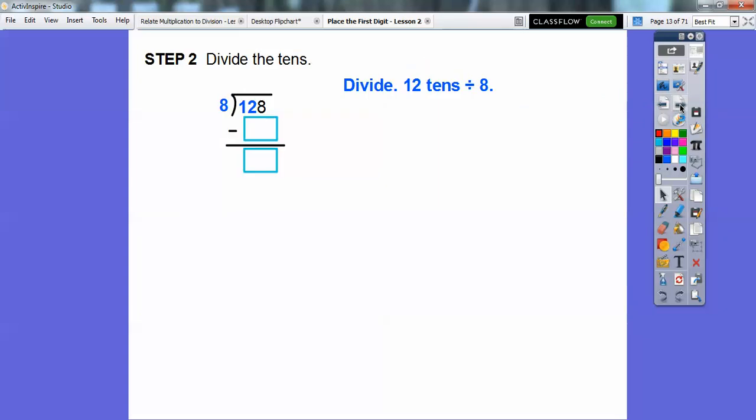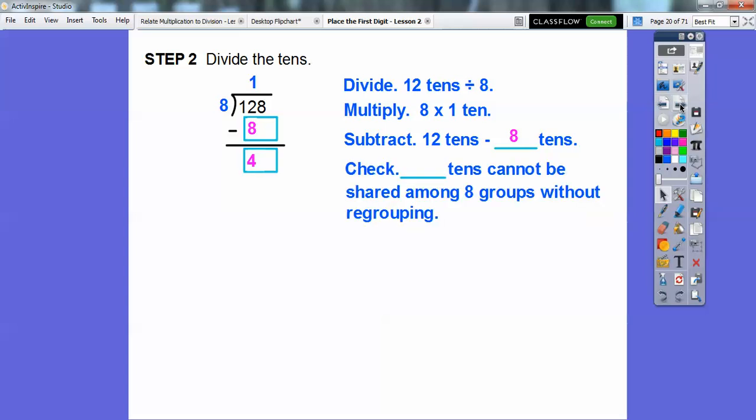So let's go ahead and divide the tens. So we're going to divide, here's 12 tens right here. That number is 128, but we're going to divide these 12 tens. So we're going to divide that by 8. Well, 8 goes into 12 one time, and we multiply 8 times 1, which gives us 8 tens. So then we subtract, 12 tens minus 8 tens is going to give us 4 tens. And then 4 tens can't be shared among this 8, so we've got to regroup, and we're going to bring the 8 down in the next step.